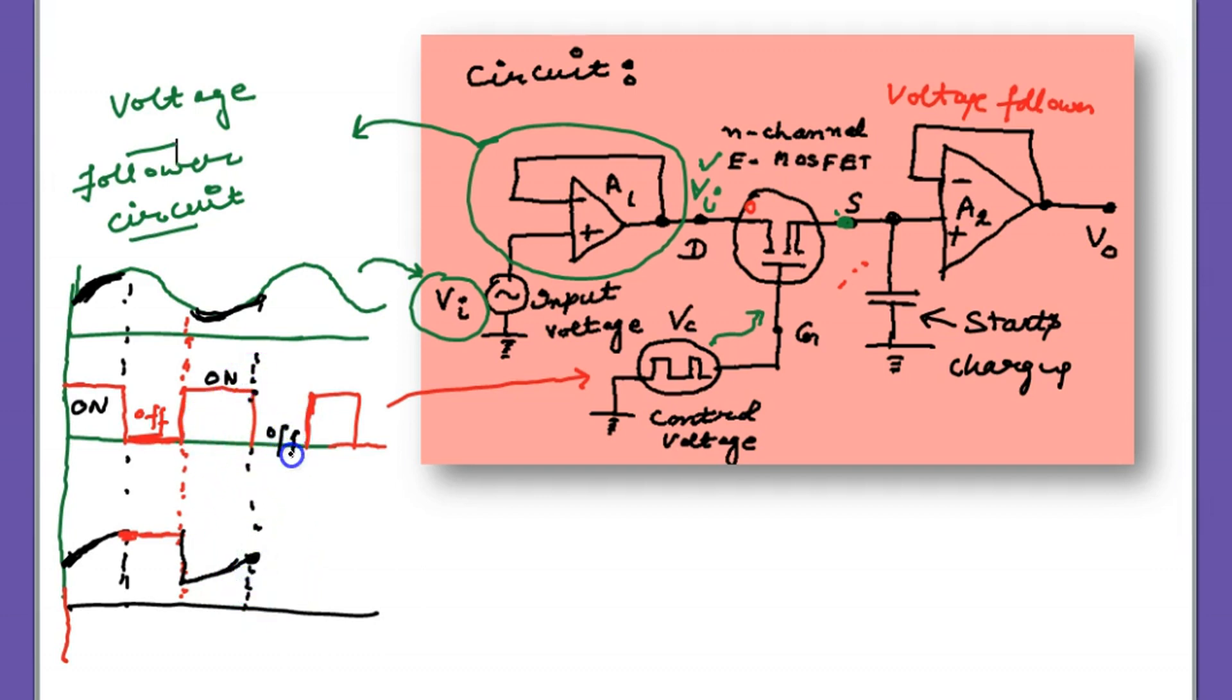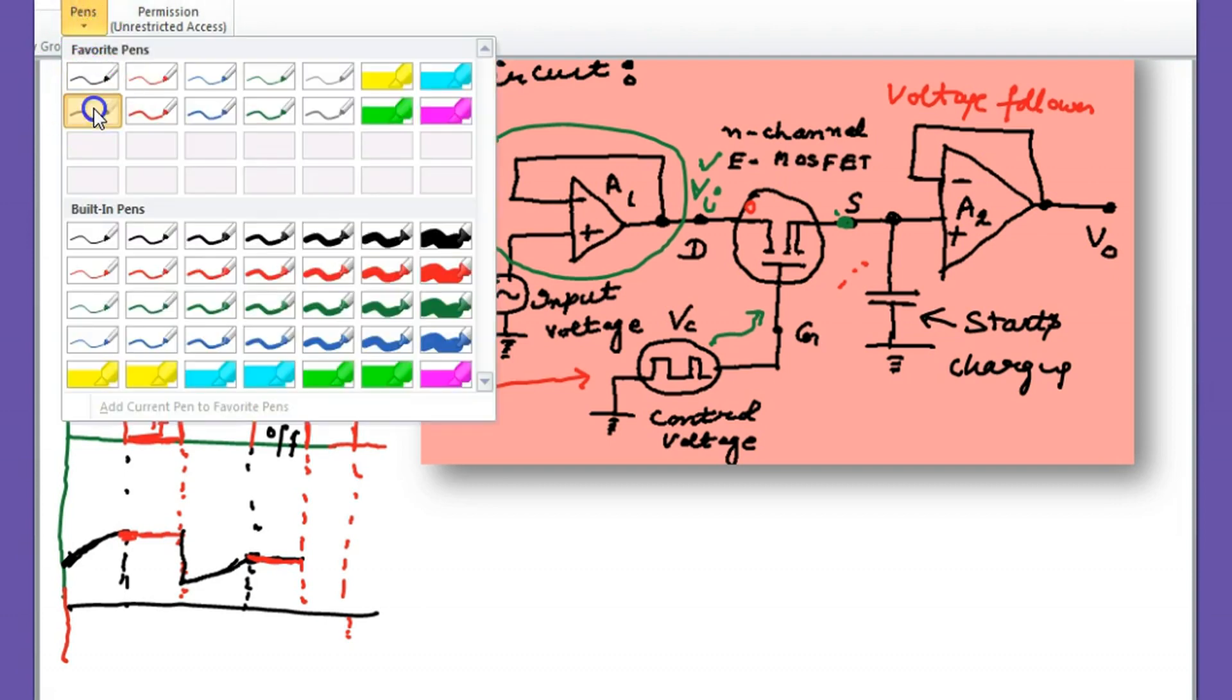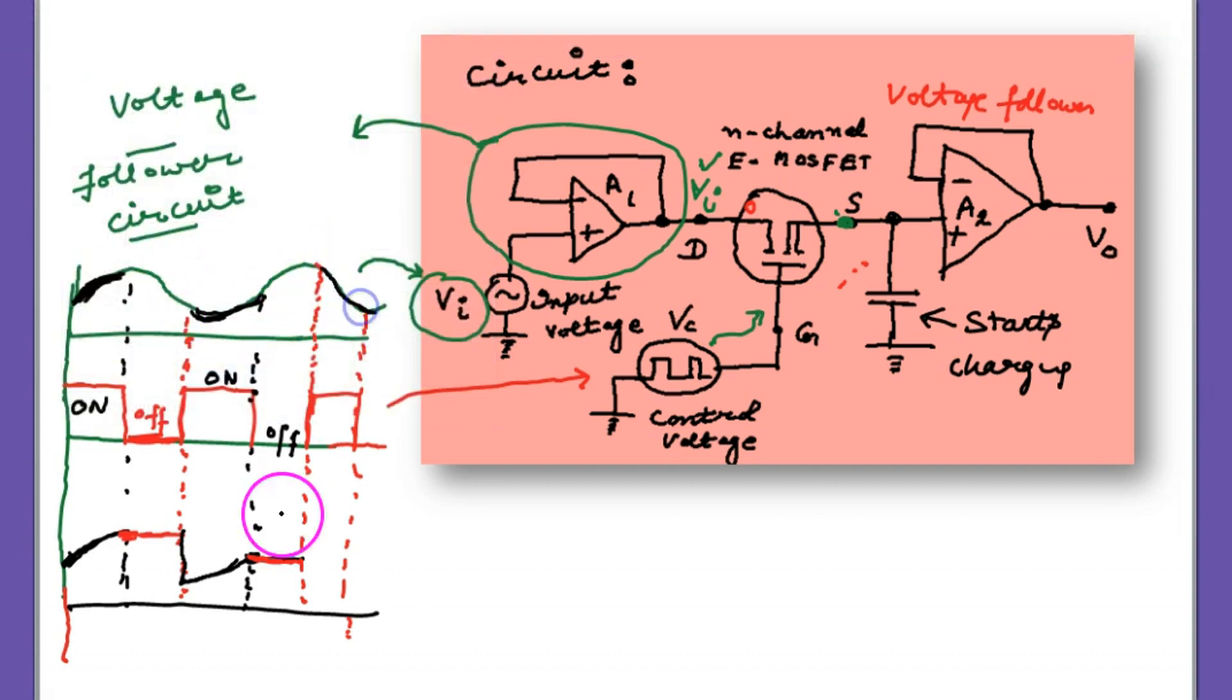Now at this instant again it is off, and the capacitor holds this voltage so long as the next square wave arrives. It holds the same, and this voltage again passes through the second op. Now again the high level comes. And then the variation of the input analog passes through the switch as well as through the second op. The same type. So ultimately the voltage of the output becomes of this shape.